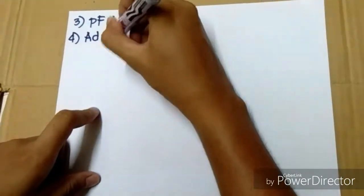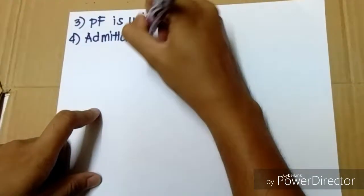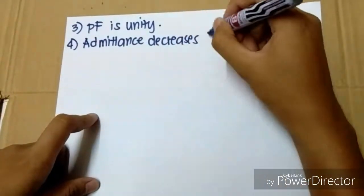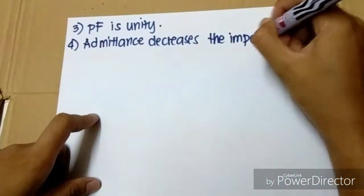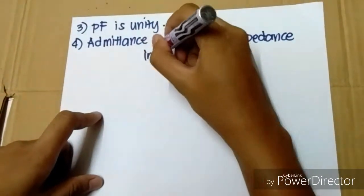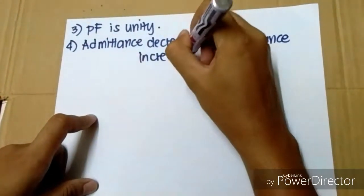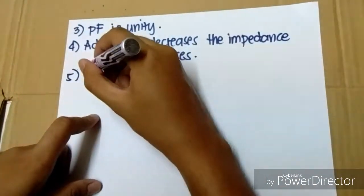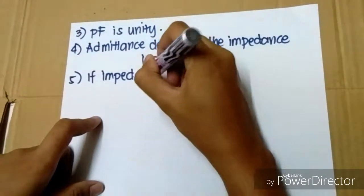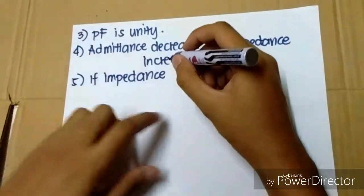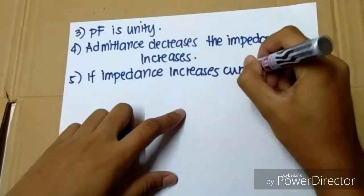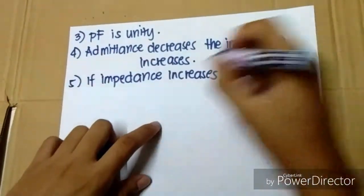Admittance decreases and impedance increases. If impedance increases, current decreases.